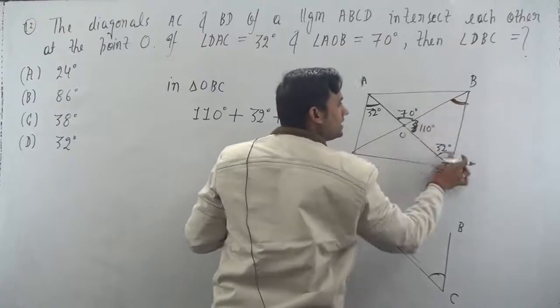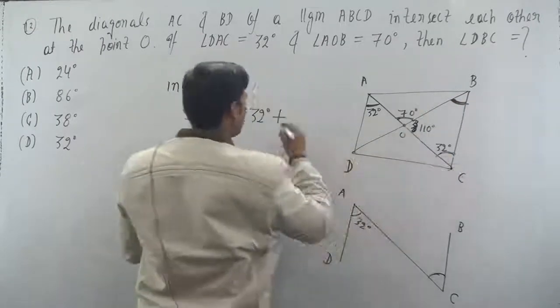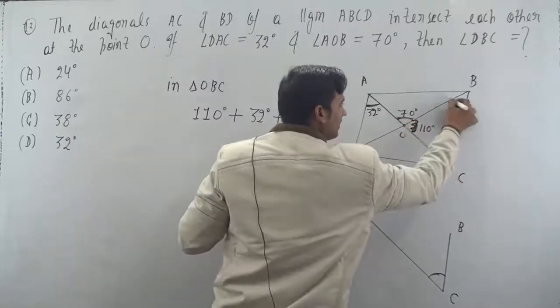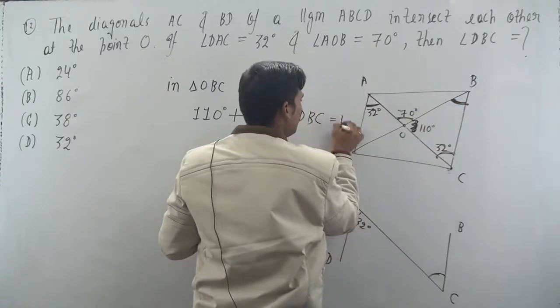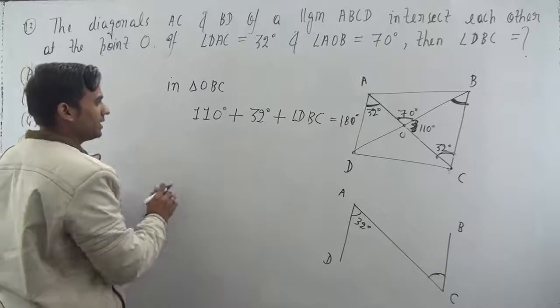Isko, ye wala angle ko aap OBC bolo ya aap DBC bolo, baat kya hai? Same hai. Correct? Toh main isko DBC bolu. So angle DBC, this angle plus this angle plus this angle is equals to 180 degrees. Angle sum property of our triangle. Triangle ke teeno angles ka sum kitna hota? 180 degrees.